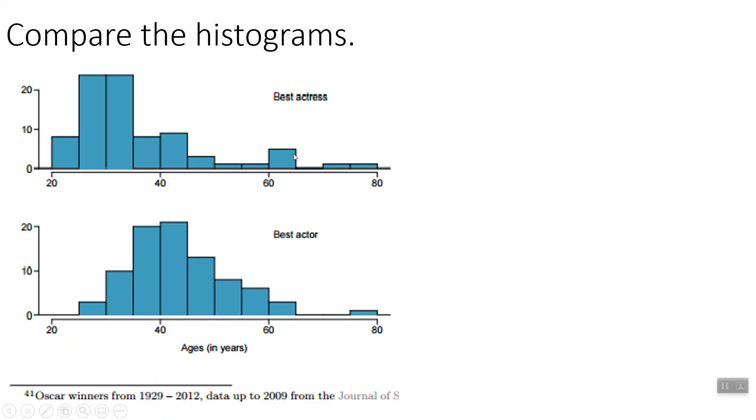So comparing histograms. We have two histograms here. One of them has the ages of the winners of the Best Actress Oscar, and the other one has the ages of the winners of the Best Actor Oscar, and this is from 1929 until 2012. So we want to compare them, so that means we're talking about graphs, so that means we want to CUSS, and then we want to use our comparison word. So we need to find the center for each one of these.